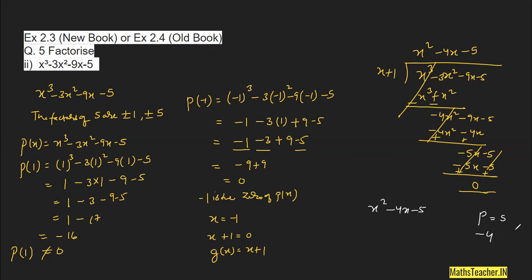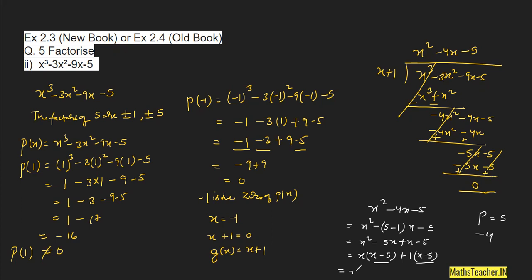Factoring by grouping: x² − 5x + x − 5 = x(x − 5) + 1(x − 5). Since (x − 5) is common, we get (x − 5)(x + 1). These two terms matching confirms we are on the right track. So the two remaining factors are (x − 5) and (x + 1).